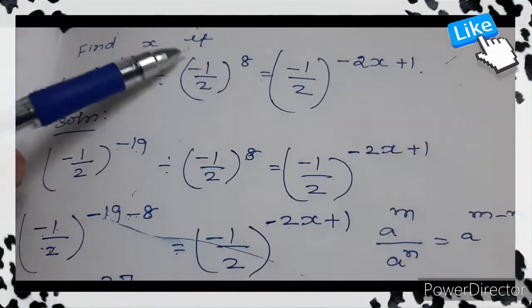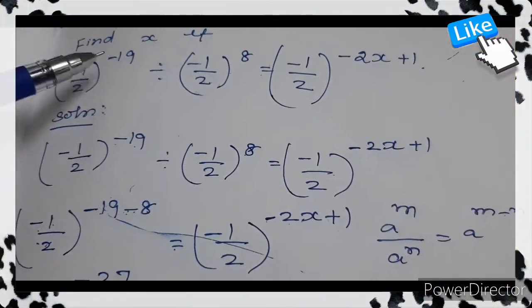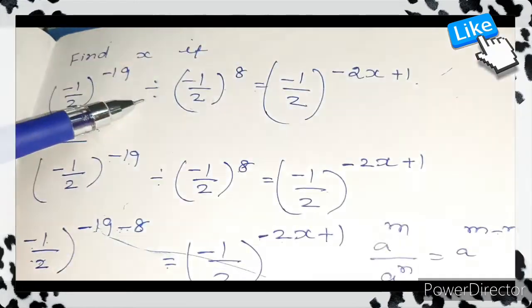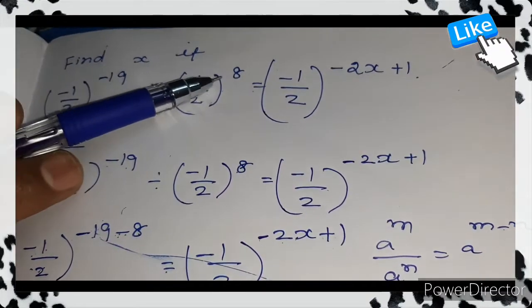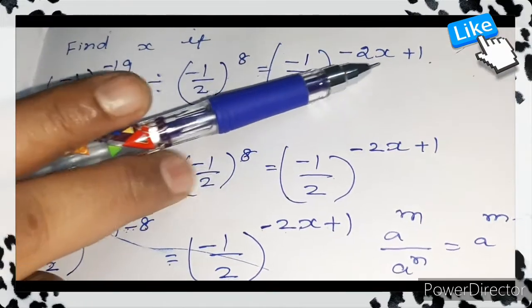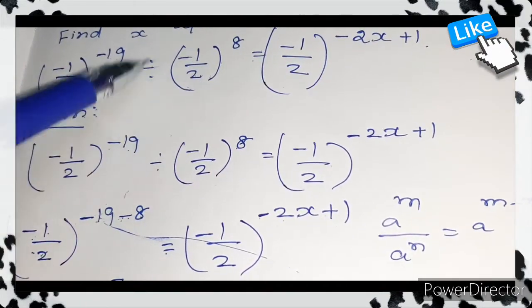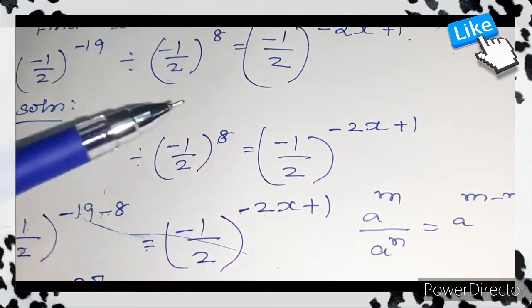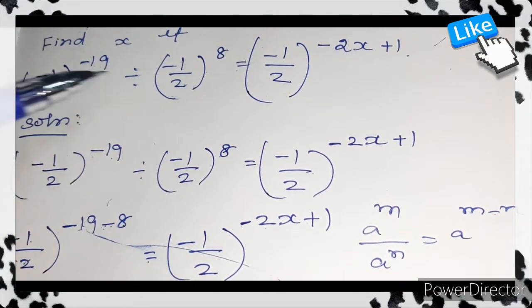The problem is find x if (-1/2)^-19 divided by (-1/2)^8 equals (-1/2)^(-2x+1). In this problem, the base is same, so it is easy to find x.